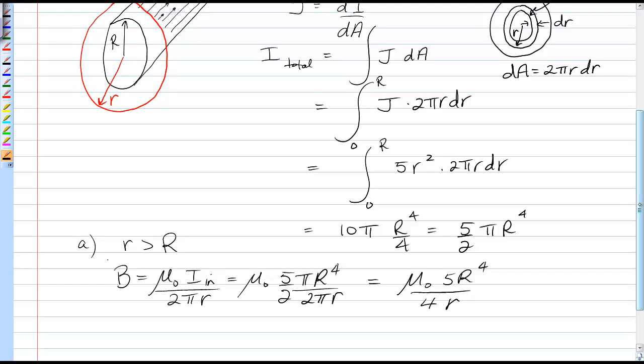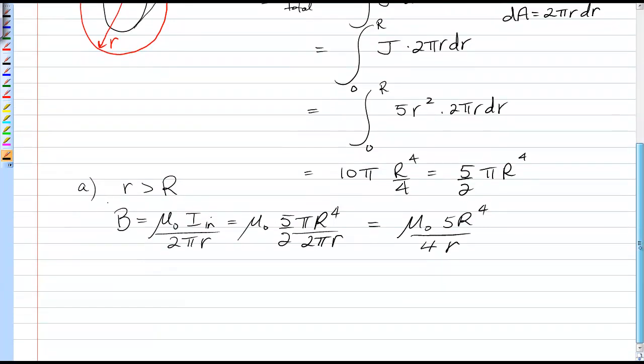And that acts like a thin wire, because it goes as 1 over r.